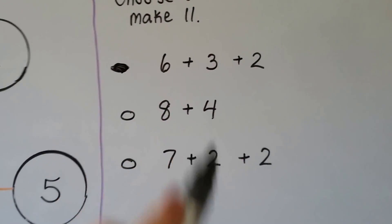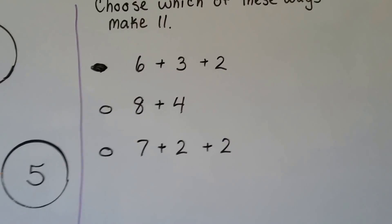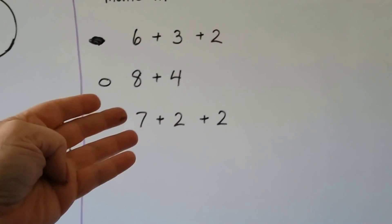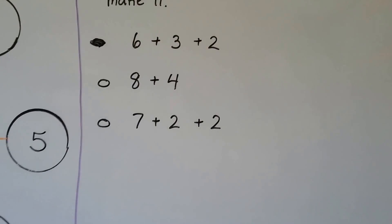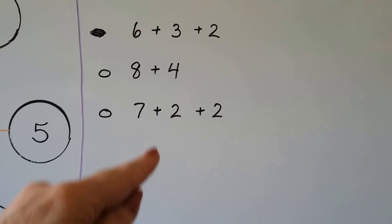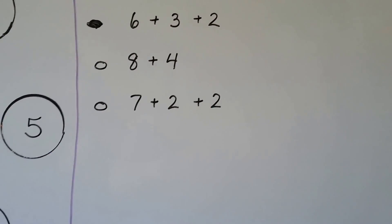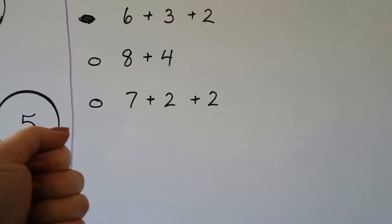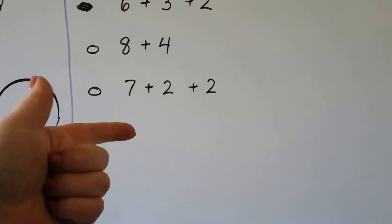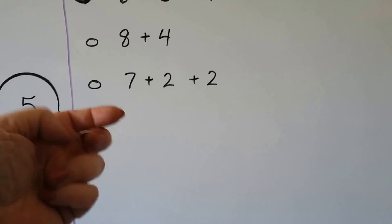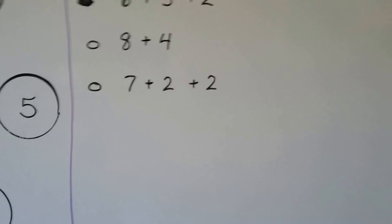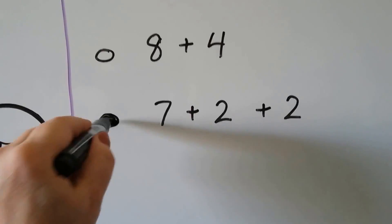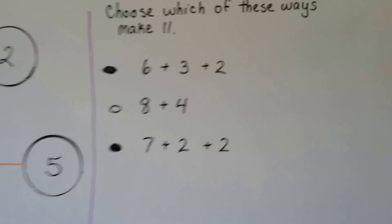How about 8 plus 4 — does that equal 11? Let's try it: start with the 8 and count on 4: 8, 9, 10, 11, 12. No, that doesn't equal 11. How about 7 plus 2 plus 2? Start with 7, count on 2 and then 2 more: 7, 8, 9, 10, 11. Yes — that is equal to 11! So the top one and the bottom one were both equal to 11.